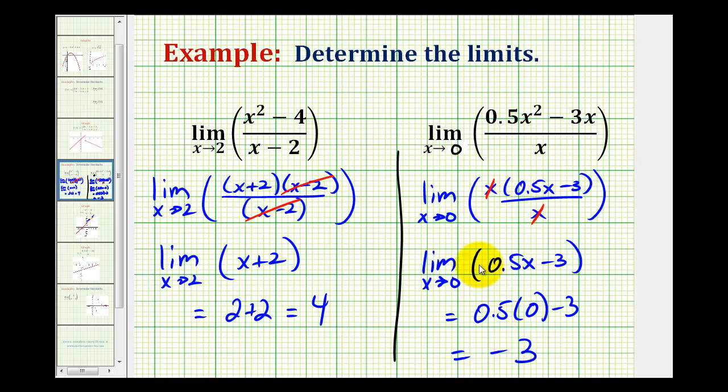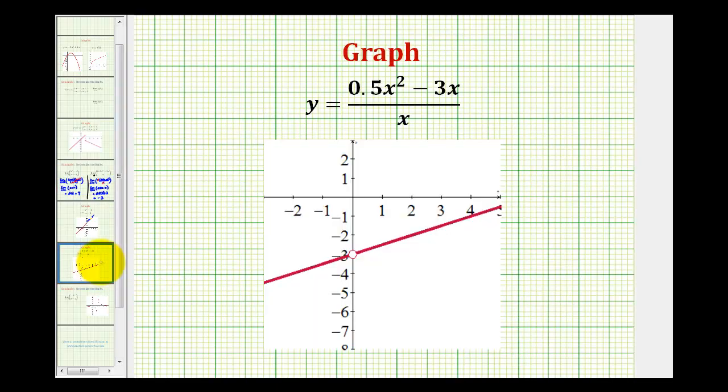Let's finish by verifying this graphically as well. Here's a graph of the given function. Again, notice the discontinuity at x equals 0. So as we approach from the left and from the right of 0, we would be approaching the function value where we have this hole.